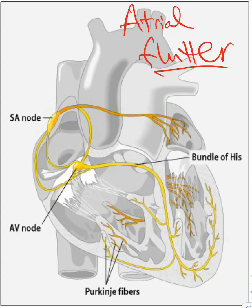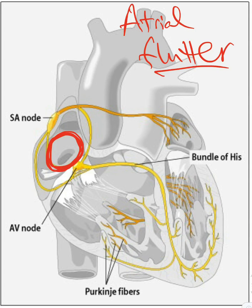This video is about atrial flutter. Atrial flutter is basically a flutter wave that happens in the atrium. How do flutter waves happen? Basically, there's a circuit that goes around in the right atrium.